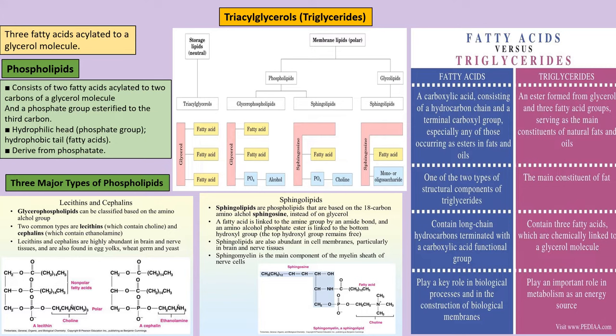Phospholipids are made up of two fatty acids esterified to two carbons of the glycerol molecule, with a phosphate group attached. They are an important component of cell and mitochondrial membranes. The three major types of phospholipids are lecithin, cephalin, and sphingolipid. Lecithin is made up of phosphatidylcholine; cephalin is a nervous tissue component; sphingomyelin makes up the myelin sheath and is a major nervous tissue component, with ceramide as its major constituent.